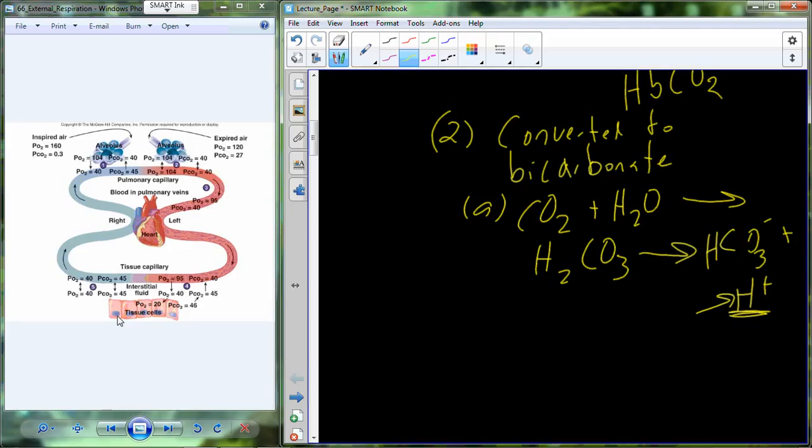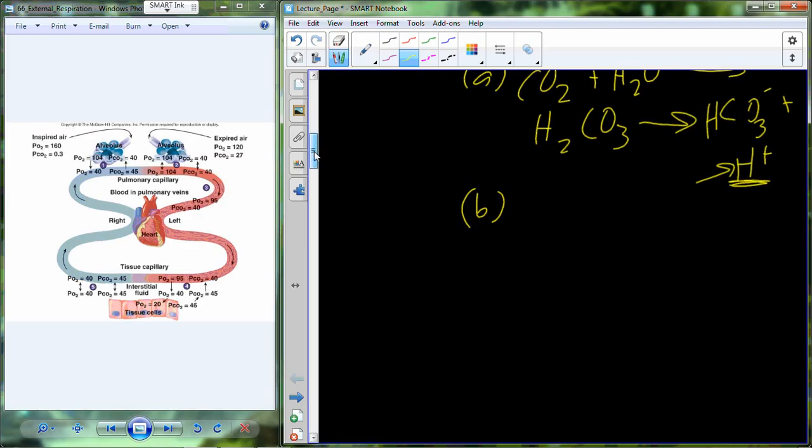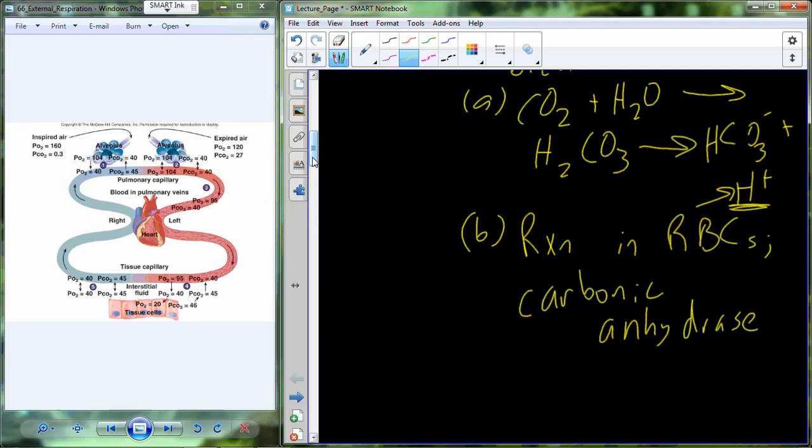Carbon dioxide needs to be picked up by the hemoglobin. In this denatured state, there's actually a higher affinity for CO2 to bind to the hemoglobin. This becomes a really important reaction to deliver oxygen where it's required and to pick up the carbon dioxide where it's being produced. This particular reaction occurs in the red blood cells. The enzyme that catalyzes this reaction is carbonic anhydrase.